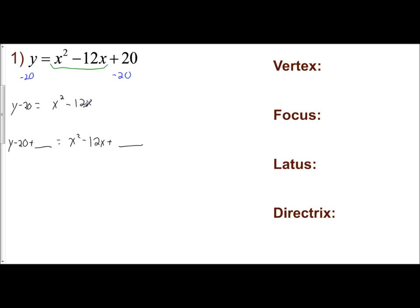To complete the square, take half of your linear term. I'm going to take half of negative 12, which is negative 6, and then square that. Negative 6 squared is positive 36. So you take half your b term, your linear term, and square it. The 36 is what I add to the right side to give me a perfect square trinomial, and to keep the equation balanced, I put the exact same value on the other side. Now we simplify.